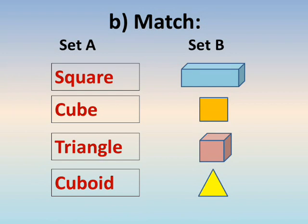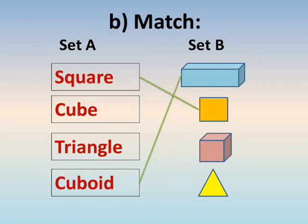Number B: match from set A to set B. The first figure is called cuboid — join with cuboid. The second figure is called square. The third figure is a cube — join with cube. The last figure is called triangle — join with triangle.